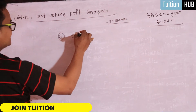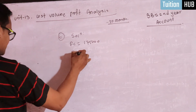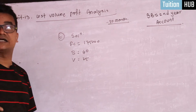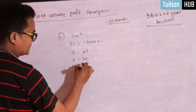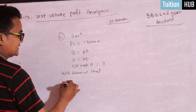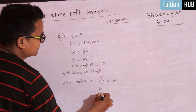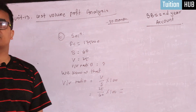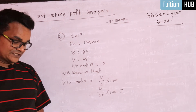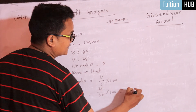The solution: fixed cost is 1,75,000; selling price is 60; variable cost is 25. We know the formula: V by S into 100, variable by sales into 100. Variable is 25, sales is 60 — so 25 divided by 60 into 100 = 41.67.